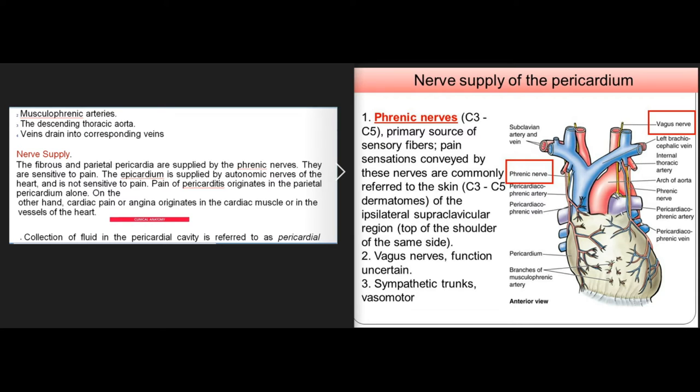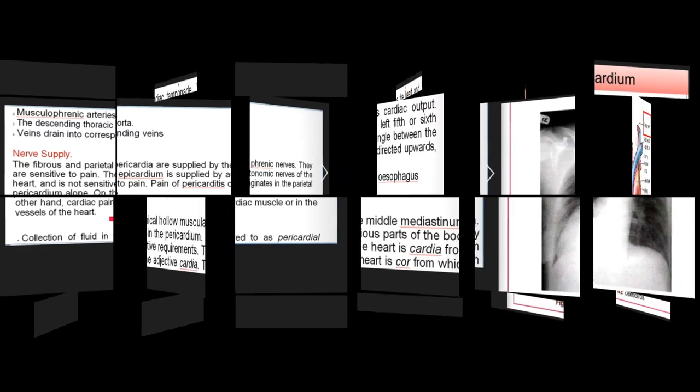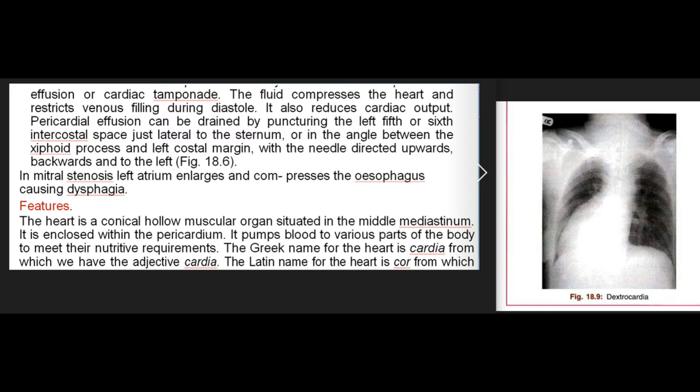Cardiac pain or angina originates in the cardiac muscle or in the vessels of the heart. Collection of fluid in the pericardial cavity is referred to as pericardial effusion or cardiac tamponade. The fluid compresses the heart and restricts venous filling during diastole, also reducing cardiac output. Pericardial effusion can be drained by puncturing the left 5th or 6th intercostal space just lateral to the sternum, or in the angle between the xiphoid process and the left costal margin, with the needle directed upwards, backwards, and to the left. In mitral stenosis, the left atrium enlarges and compresses the esophagus, causing dysphagia.